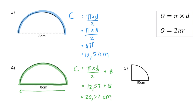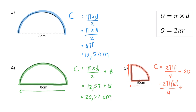Instead of half a circle we now have a quarter circle. The diameter is not given but the radius is 10 centimeters. To go right around this shape we take a quarter of the original circle circumference, then add one radius to get to the center and another radius to get back to where we started. So the perimeter is 2 times pi times the radius divided by 4, plus 20. Substituting the radius with 10 centimeters gives a value of 35.71 centimeters.